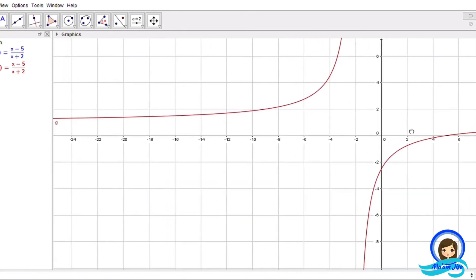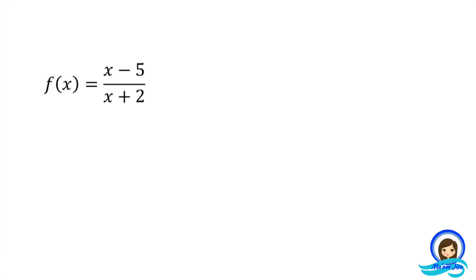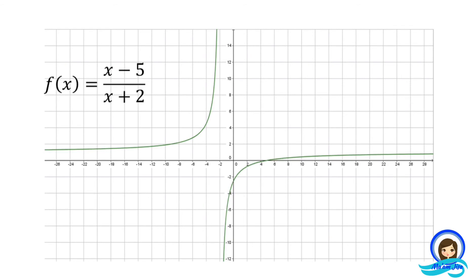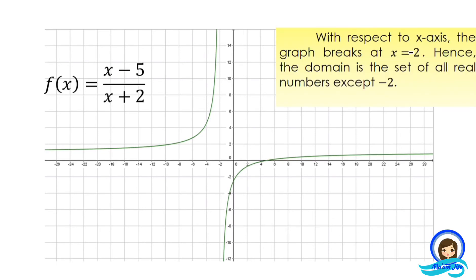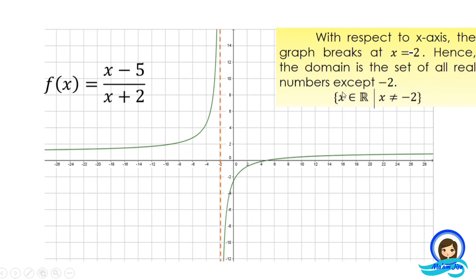What does this imply with regards to the domain and range of a rational function? In the graphing software, with respect to the x-axis, the graph breaks at x equals negative 2. This broken line tells us the graph breaks at this particular value — the graph gets closer to this point but does not cross or touch it. Hence, the domain is the set of all real numbers except negative 2, written as the set of all x's where x is an element of real numbers such that x is not equal to negative 2.